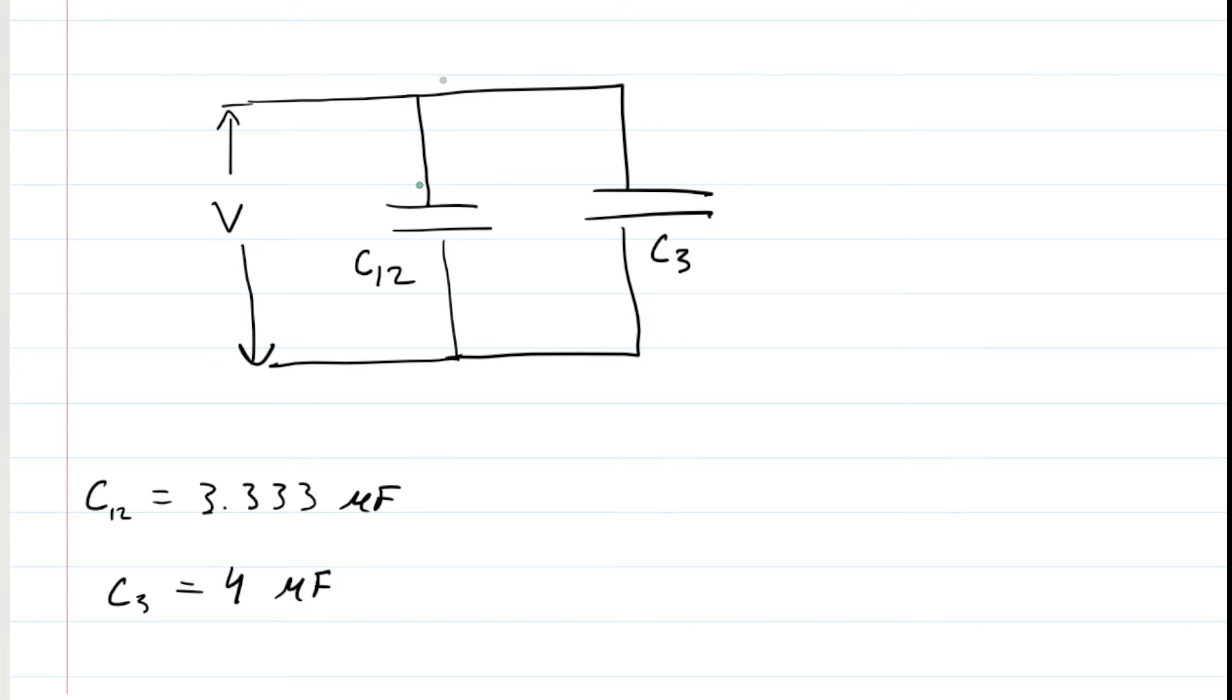Now we have just two capacitors in this circuit, and we can see that these two capacitors are in parallel with one another. To find the equivalent capacitance of parallel capacitors is even easier, because all you need to do is sum the individual capacitance values. In other words, the equivalent capacitance of a parallel arrangement would just be C12 plus C3.